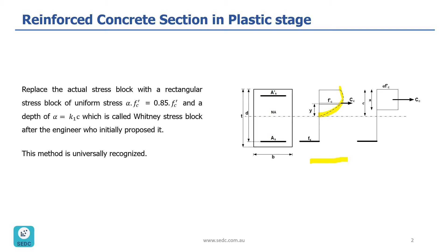But there is a method to simplify this stress block. We can actually replace this actual stress block with a rectangular stress block, which is shown here, with a uniform stress of alpha times f prime c, where alpha is 0.85, and with depth of a. A is a factor of c, and that factor is called k1. This stress block is called the Whitney stress block, after the engineer who initially proposed it.